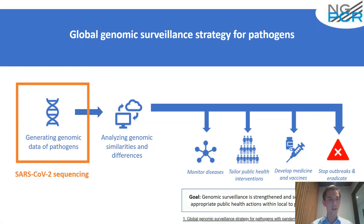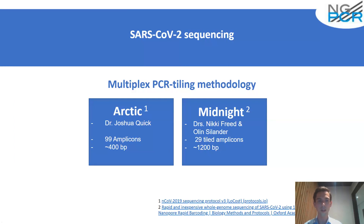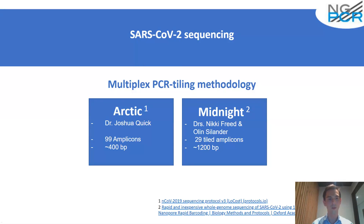If we take a closer look at SARS-CoV-2 sequencing at the moment, we see two main protocols that are used. We have the ARTIC protocol from George Quick, which uses 99 amplicons of around 400 base pairs. And we have the Midnight protocol from Nikki Freed and colleagues, where they use around 29 to 30 amplicons, which are around 1,200 base pairs.